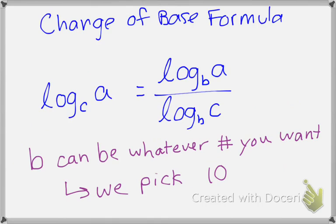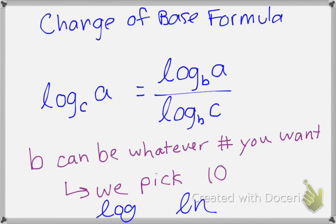The last thing I want to talk about is the change of base formula. This formula converts a logarithm of any base into a logarithm of any other base. We typically use it to convert to base 10 — common logs — so we can plug it into our calculator. Scientific calculators can only compute common logs and natural logs, so it's easiest to convert to common logs. The formula is: log base C of A equals common log of A over common log of C. It's a pretty easy formula, but it's useful and you'll need to have it memorized before the test.